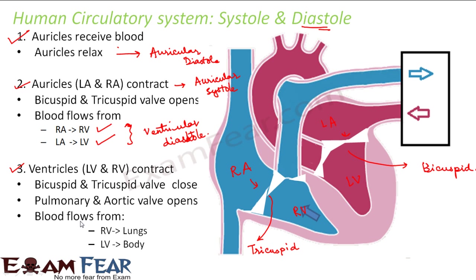In the next step, the ventricles contract because they are now filled with blood, and the bicuspid and tricuspid valves close. The pulmonary and aortic valves then open. The pulmonary valve is located at the right ventricle leading to the pulmonary artery. When these valves open, the blood collected in the right ventricle flows out through the pulmonary artery to the lungs, and blood from the left ventricle flows to the body.